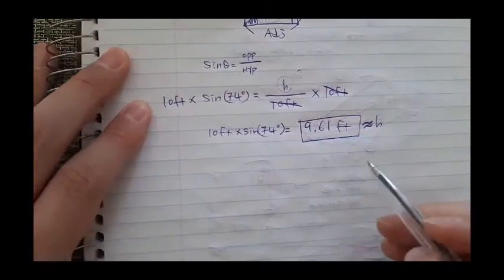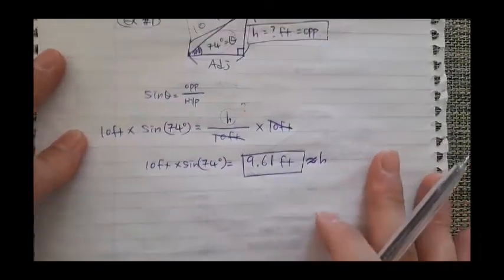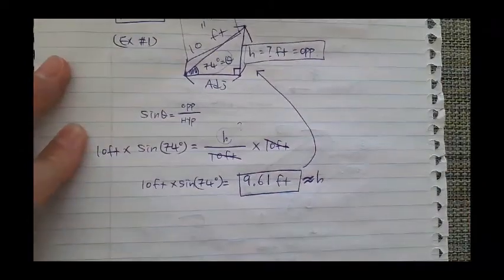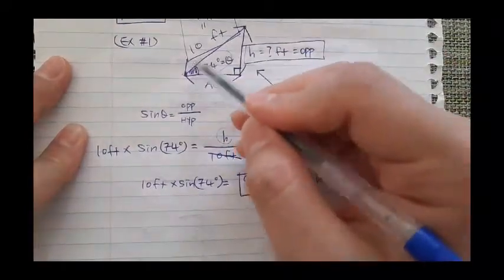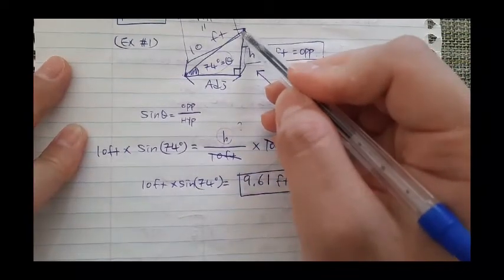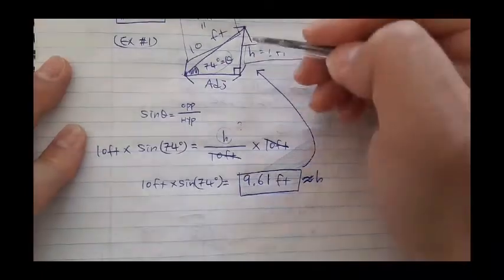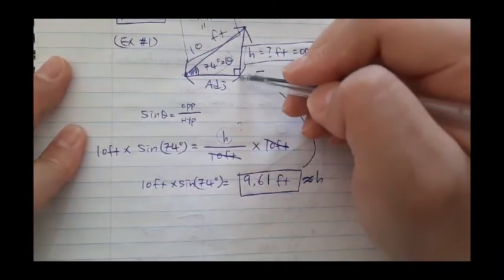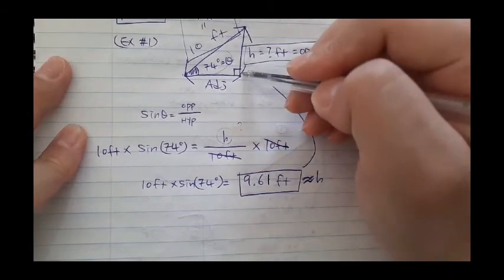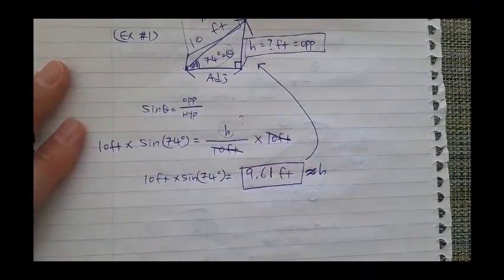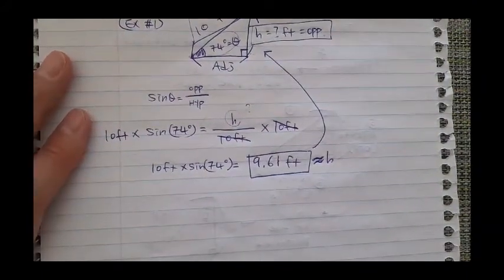I'm putting a squiggly equals sign to indicate a rounded answer: approximately 9.61 feet is the height. There's one way to double-check: the hypotenuse is 10 feet and the hypotenuse should be the longest side. Thankfully 9.61 is smaller than 10 feet. If you somehow got a height greater than 10, like 11 feet, then something went wrong.